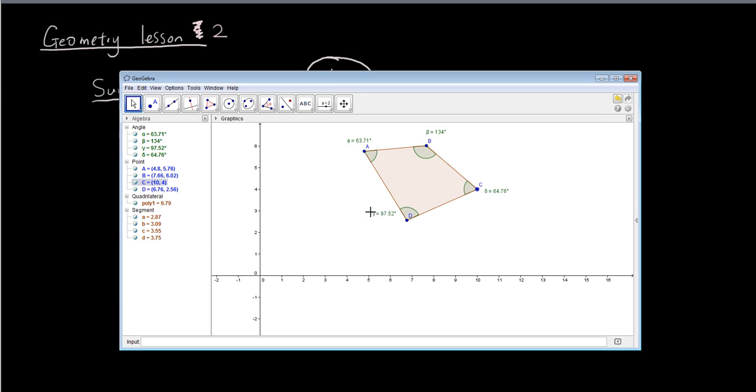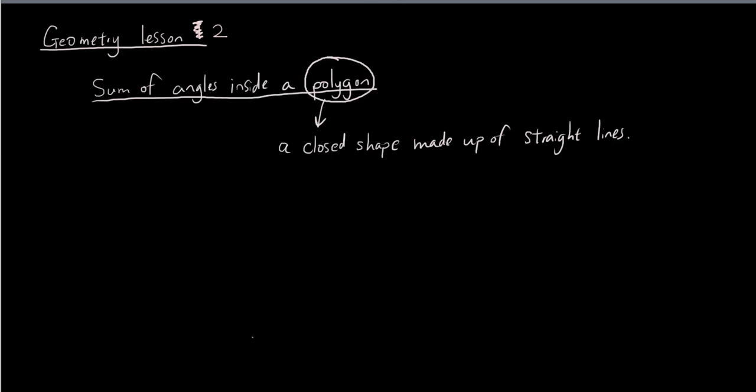So that gives us the rule that angles in the quadrilateral, bracket 4 sided polygon, sum up to 360 degrees.